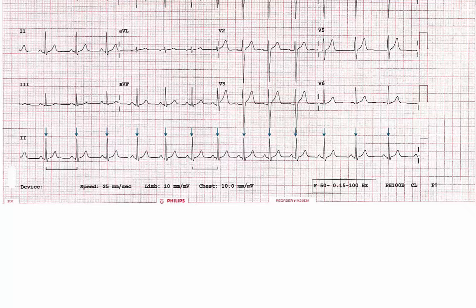To summarise: we'll start by calculating the heart rate. If the rhythm is regular, we'll use the distance between any two heartbeats, or the RR interval, to calculate the heart rate. If there's any evidence of irregularity, we'll calculate the average by counting the total number of complexes across the 10 seconds of recording and multiplying by 6.